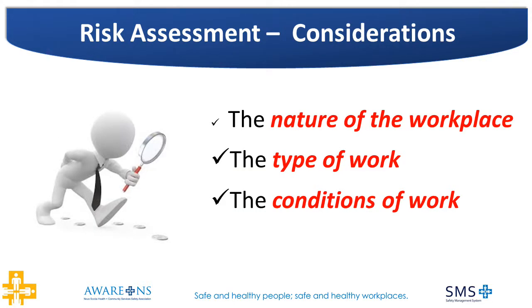The risk of violence occurring in the workplace is linked to a number of factors found in the work environment. These include the nature of the workplace — which considers the physical aspects such as whether it is a building, construction site, vehicle, or forest — including workplace lighting, lines of sight, depth of counters, entrances, exits, and objects that could be used to hurt employees. Also, the type of work, which refers to the activities performed by employees and the sector of work and people with whom employees interact. And the conditions of work, which refer to other aspects such as hours worked, the surrounding neighborhood, and whether employees move from location to location, work alone, or in isolation.